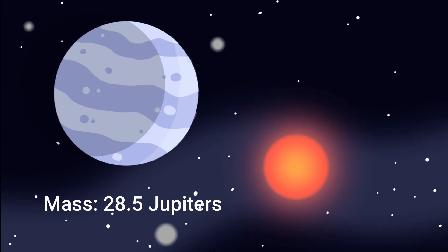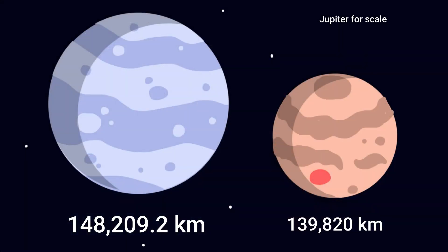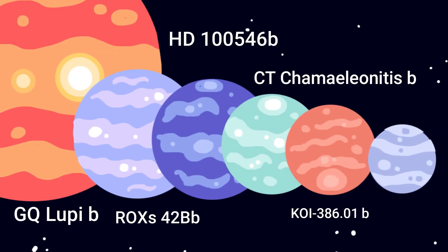It has a mass 28.5 times greater than Jupiter or 2.71% the mass of the Sun, making it one of the most massive exoplanets ever discovered, but only has a diameter of 148,209.2 kilometers.